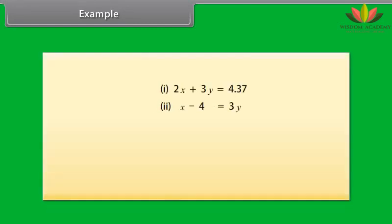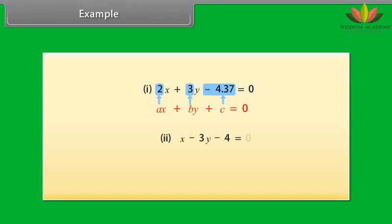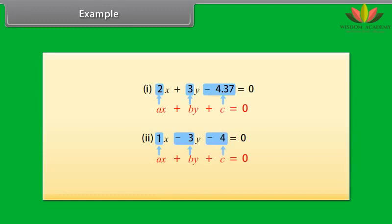Let us now write these equations in the form AX plus BY plus C equals 0. The first equation can be written as 2X plus 3Y minus 4.37 equals 0, where A equals 2, B equals 3, and C equals minus 4.37. The second equation can be written as X minus 3Y minus 4 equals 0, where A equals 1, B equals minus 3, and C equals minus 4.